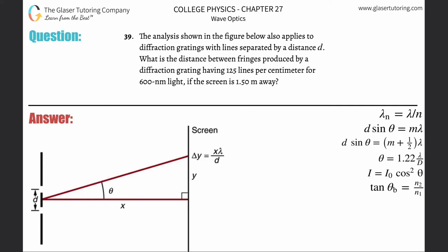Number 39. The analysis shown in the figure below also applies to diffraction gratings with lines separated by a distance d. What is the distance between the fringes produced by a diffraction grating having 125 lines per centimeter for 600 nanometer light if the screen is 1.5 meters away?